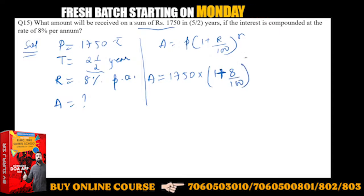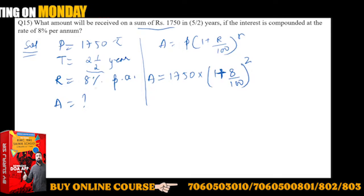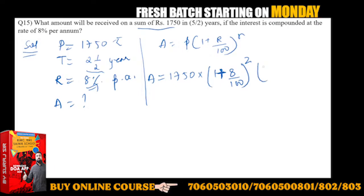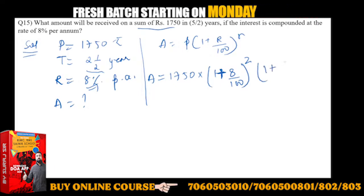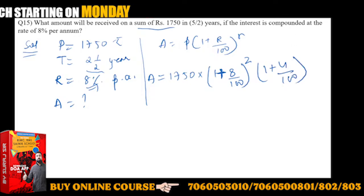Now for the remaining six months or half year. The rate is given to me per annum, but if I have to take rate as per half year, I have to half the rate. So here it will be 1 plus 8 by 2, that will be 4 by 100, to the power - what will be n here? Six month period means one half-year period, so power 1.